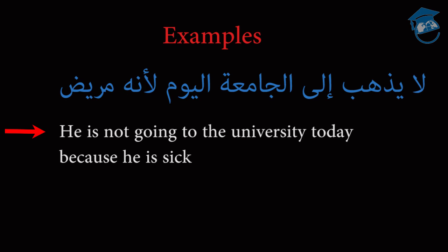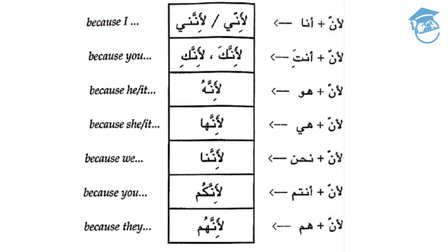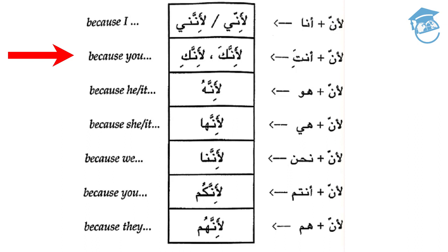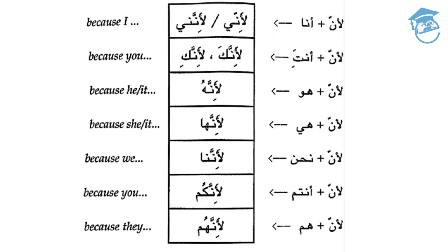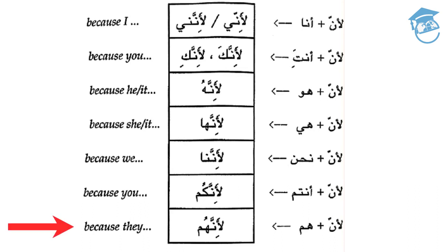Notice that if the jumla ismiya following li'enna begins with a pronoun, the pronoun must be attached to li'enna. To say because I: li'enni or li'enna ni. Because you (male): li'enna ka. Because you (female): li'enna ki. Because he or it: li'enna hu. Because she or it: li'enna ha. Because we: li'enna na. Because you (plural): li'enna kom. Because they: li'enna hum.